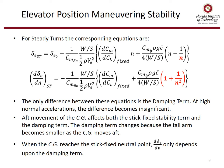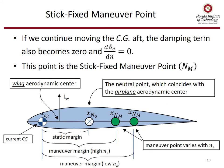When the CG reaches the stick-fixed neutral point, d(delta_e)/dn depends only upon the damping term. If we continue to move the CG aft of the stick-fixed neutral point, eventually the damping term will also become zero and the overall slope d(delta_e)/dn will also be zero. This CG location is called the stick-fixed maneuver point, N sub m.